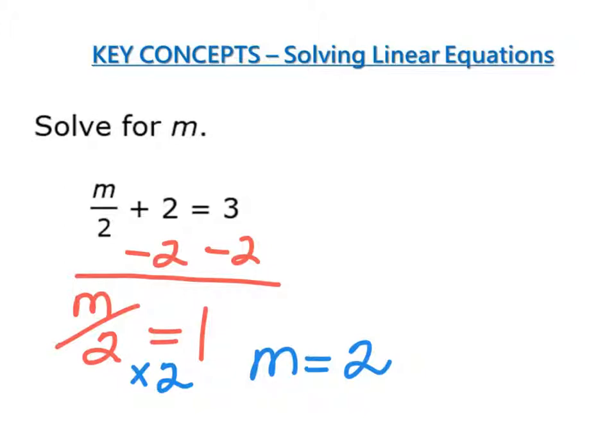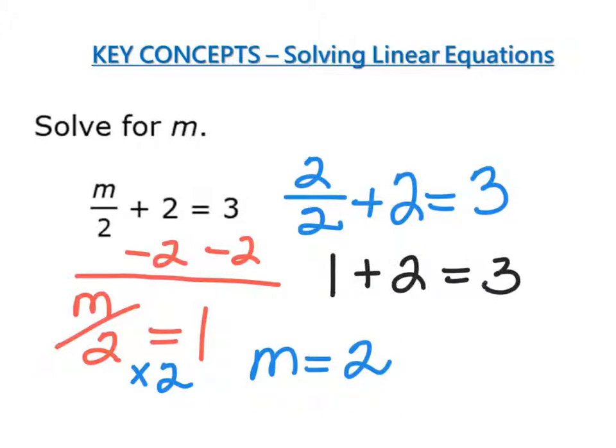I'm going to check that by replacing m with 2. So I have 2 divided by 2 plus 2 equals 3. 2 divided by 2 is 1. 1 plus 2 equals 3. That works out. So m has to equal 2.